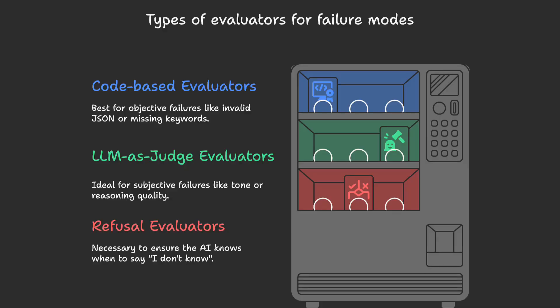With failure modes defined, we can create automated evaluators to detect them. Our choice of evaluator type depends on the nature of the problem. Code-based evaluators are for objective failures — simple assertions that check for things like valid JSON, presence of required keywords, or correct function calls. They're fast, cheap, and deterministic. LLM-as-a-judge evaluators are for subjective failures. If you need to assess tone, relevance, or reasoning quality, we can train a specialized judge model using our labeled dataset. Then we measure its accuracy against human labels, aiming for high true positive and true negative rates, and use binary prompts so the judge returns pass or fail.